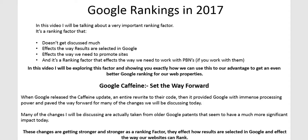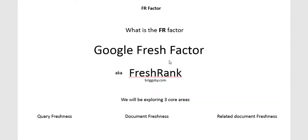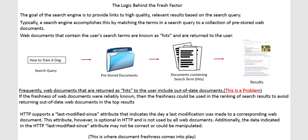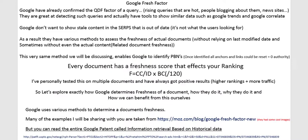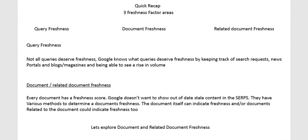In that presentation, we spoke about the Google fresh factor, which is also known as the fresh rank. We spoke about query deserves freshness, document freshness, and related document freshness. Every document on the internet has a freshness score, and the reason is because Google doesn't want to show out-of-date stale content in the search engines. They have various methods to determine a document's freshness — the document itself can indicate freshness, or documents related to a document can indicate freshness too.